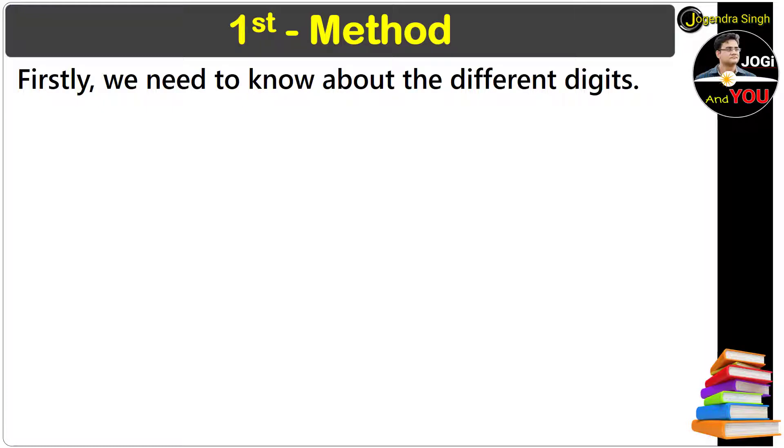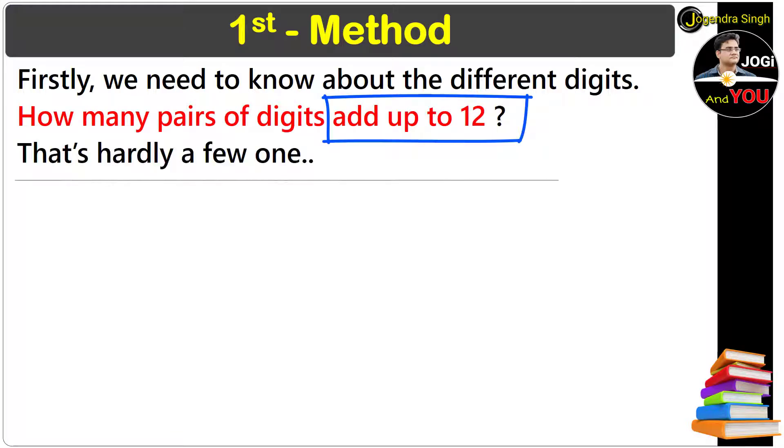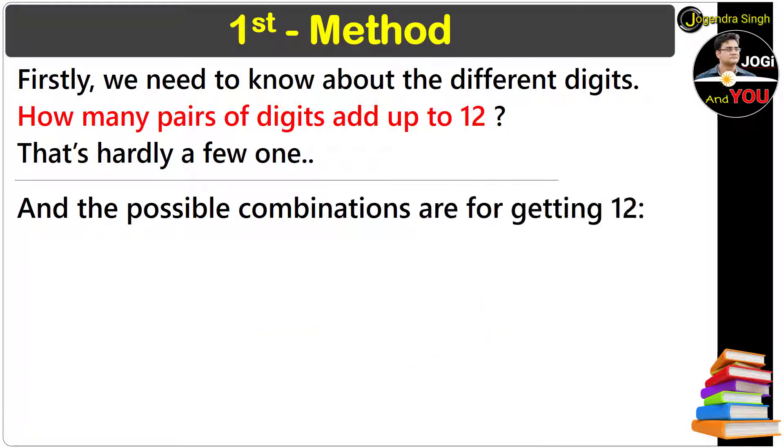Here is your first method. Firstly we need to know about the different digits. How many pairs of digits add up to 12? That's hardly a few. Did you get it? Yes. Okay, I'll tell you everything. The possible combinations for getting 12 are 3 and 9, 4 and 8, 5 and 7, 6 and 6.